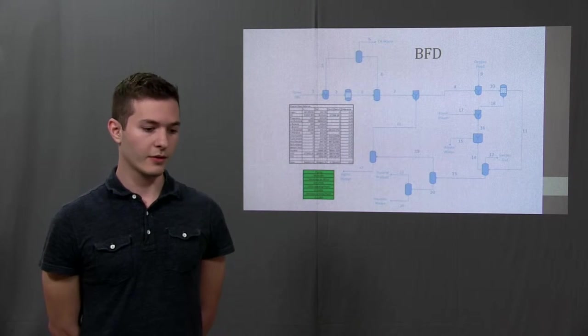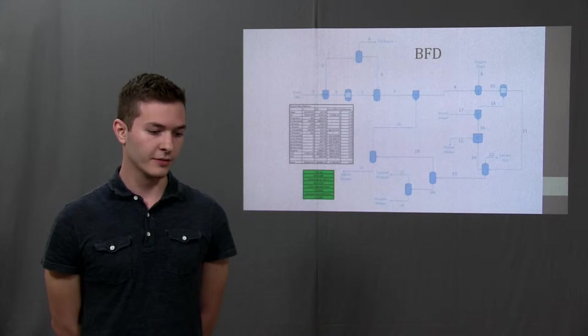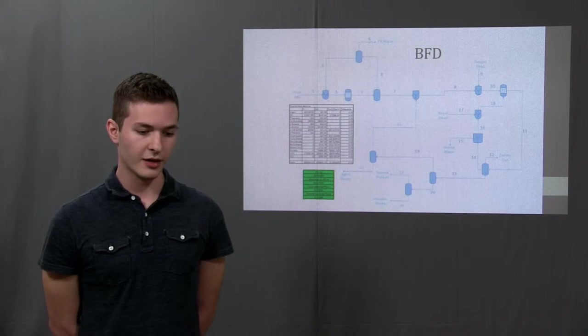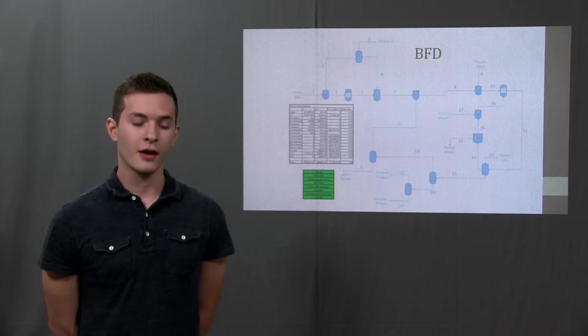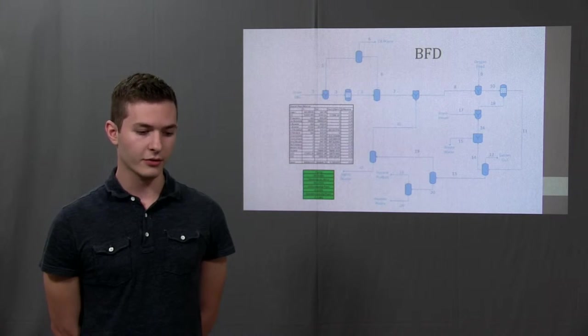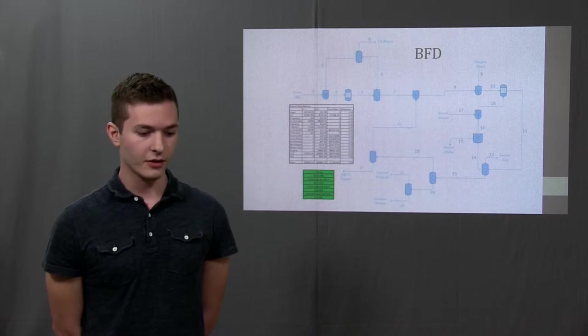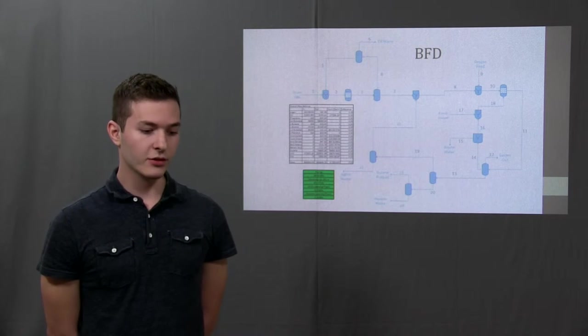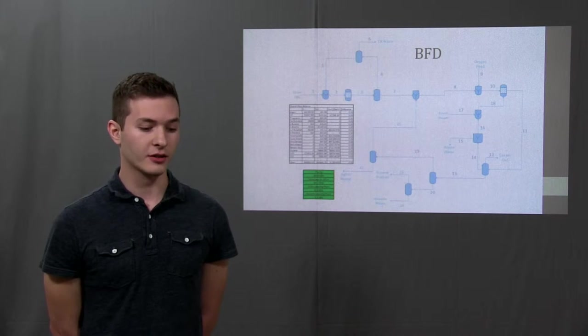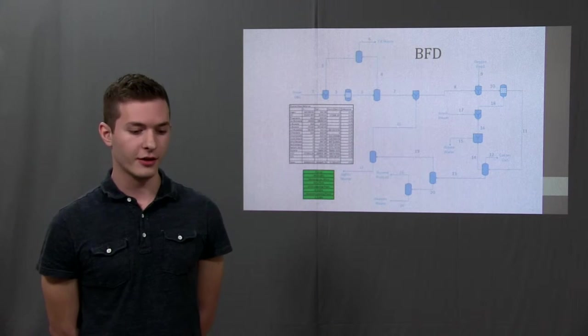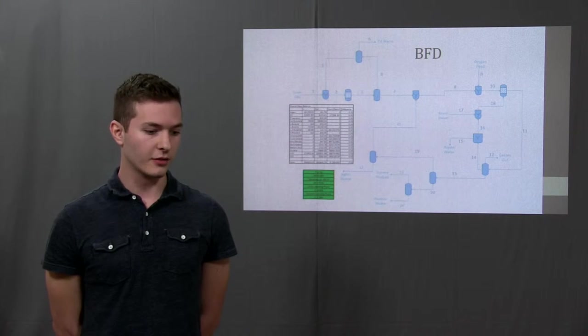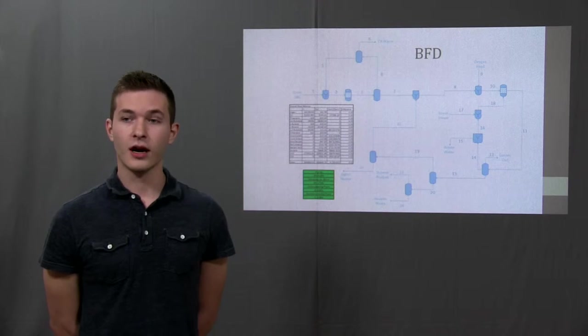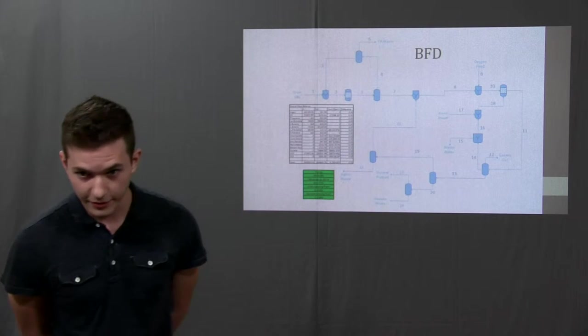First, the organics are separated into lights and heavies. From there, the lights go to the second separator which separates out the VCHX and other light components and from here the VCHX is recycled back into the VCHX reactor and the lights are sent to the waste tank. The heavies go to a final separator which then separates our final product styrene from the heavy organics. Styrene in its final form is then sent to our storage and the heavies are also sent to the waste. So Kyle is going to talk about the economics of our process. Thank you.